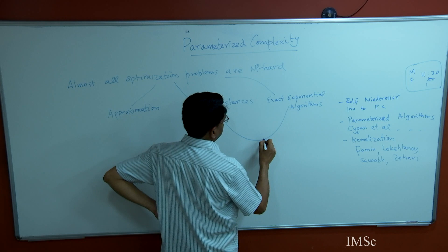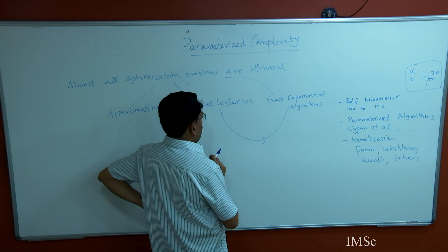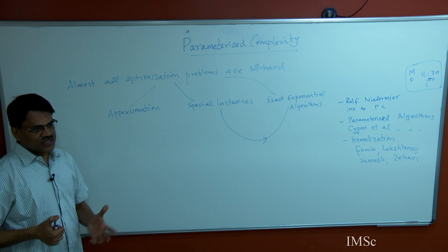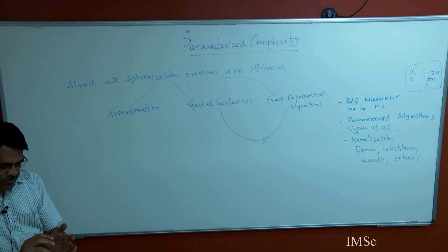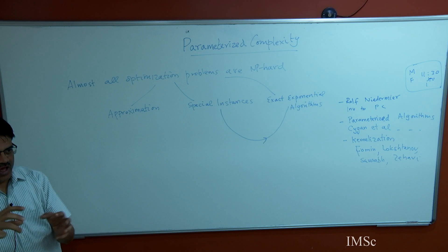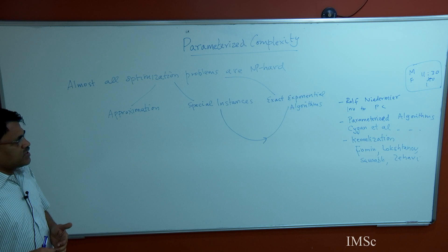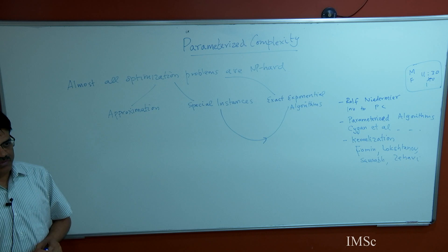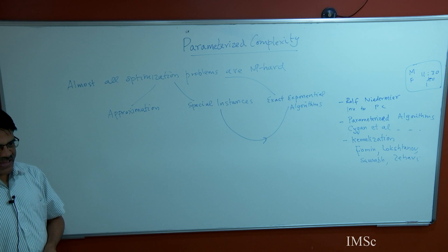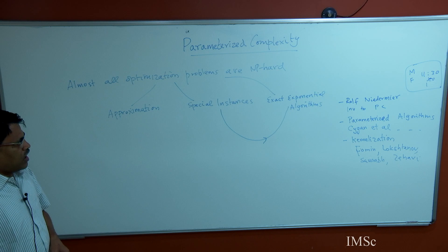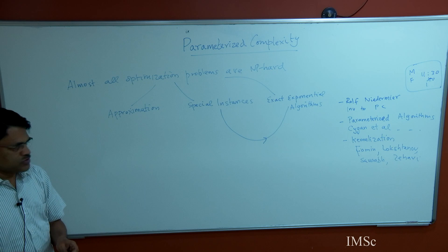Parameterized complexity can be thought of as a smoothening, a bridge between these two approaches, where we parameterize the special instance. In what sense the instance is special, we throw in some parameter k. If the parameter is small, you have an efficient algorithm; as the parameter grows, the algorithm gets worse. We want to measure the complexity of the problem in a multi-dimensional way. Classically we have been looking only at input size as a measure — polynomial or exponential in the input size. Now we want to throw in a secondary measurement, as Downey and Fellows call it, and ask what is the complexity as the parameter increases.